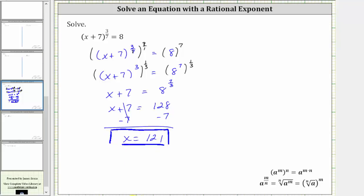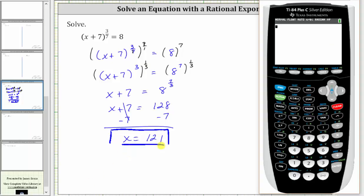Let's verify this on the calculator. We substitute 121 for x, which gives us 121 plus seven, raised to the power of three-sevenths. Notice this does equal eight, verifying our solution is correct. I hope you found this helpful.